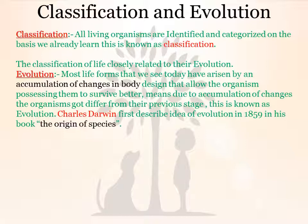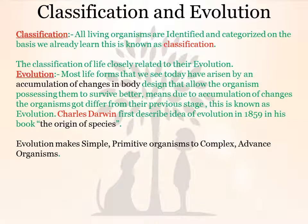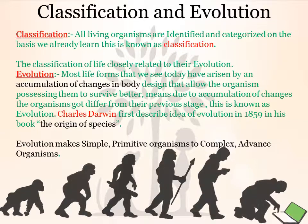This is known as evolution. Charles Darwin first described the idea of evolution in 1859 in his book 'The Origin of Species.' Evolution makes simple primitive organisms — those organisms which were present in the past — into complex and advanced organisms present today. Simple organisms have very simple body structures, while complex organisms have much more advanced structures.